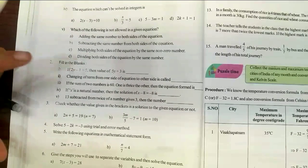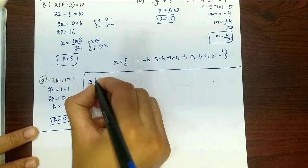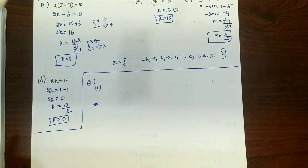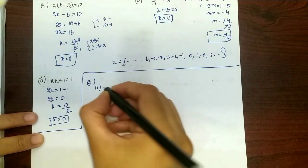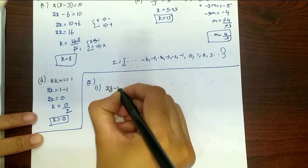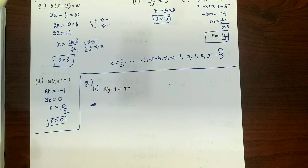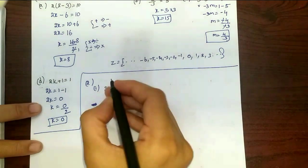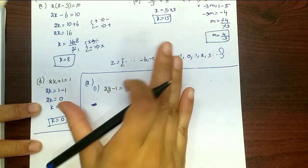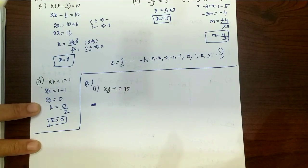So, we will check the answer. In the second row, we will check the first one. The first one is 2y minus 1 is equal to 5. We will first find the value of y, then we will find the value of 5y plus 3.